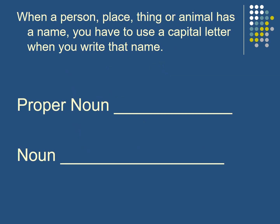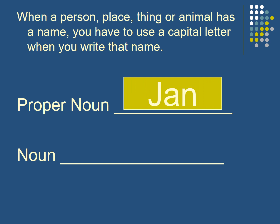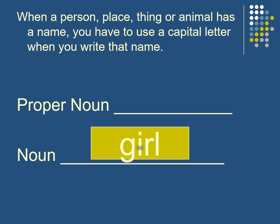When a person, place, thing, or animal has a name, you have to use a capital letter when you write that name. For example, the proper noun Jane — I have to write it with a capital letter. When I say the noun, it's girl. So the word girl is a noun, and I don't have to capitalize it. But the proper noun is Jane.